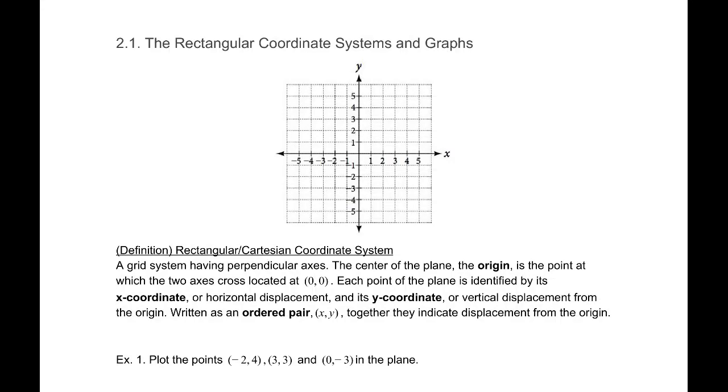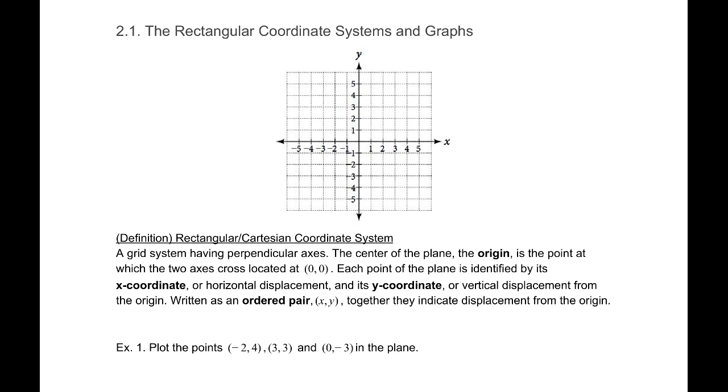Section 2.1, the rectangular coordinate systems and graphs. To begin with, we have a definition of what the Cartesian coordinate system is. It is a grid system having perpendicular axes. So we assume that these two are drawn at a 90 degree angle.